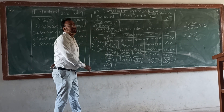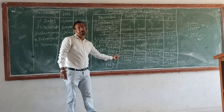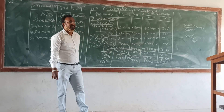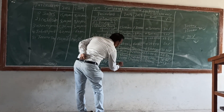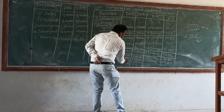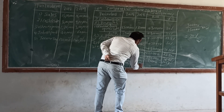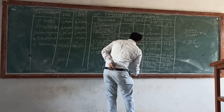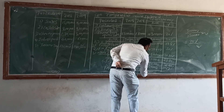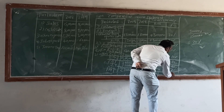Profit After Tax: first year is 2,70,000 and second year is 4,00,000. The difference is 1,30,000 and the percentage increase is 48.15%.